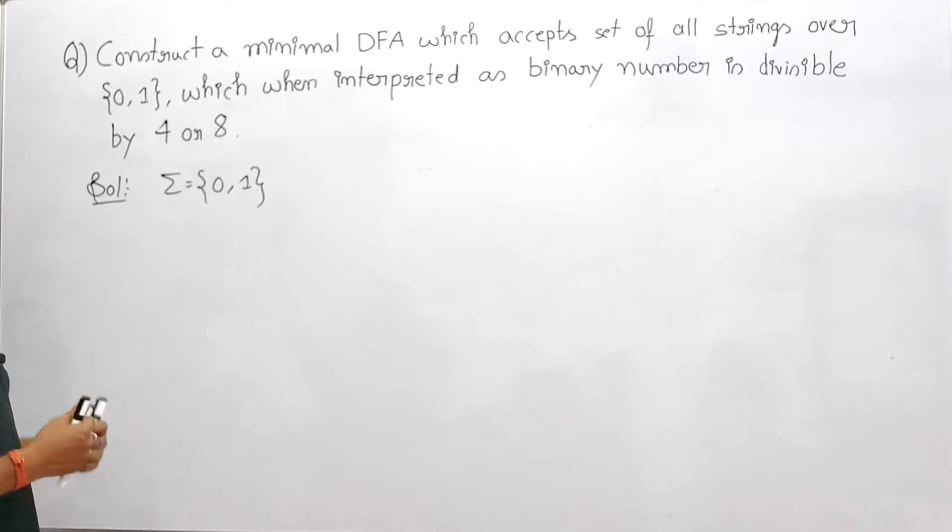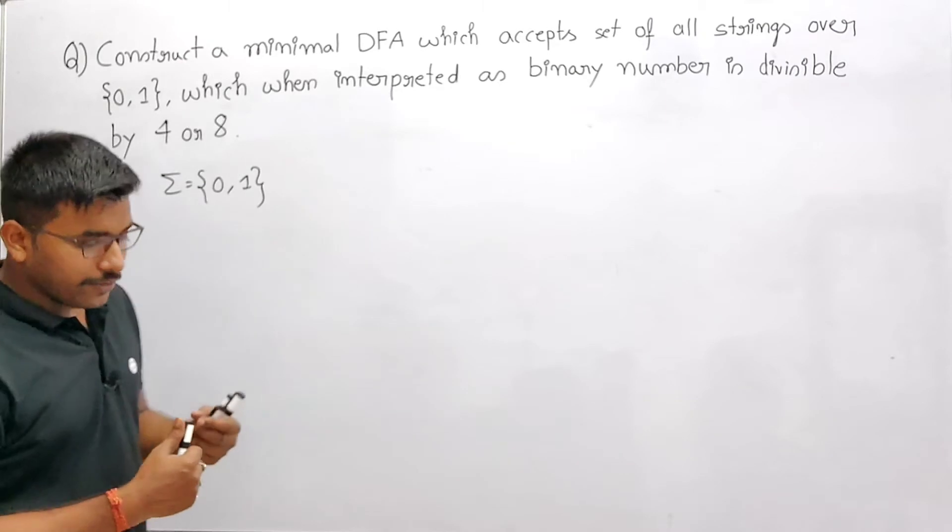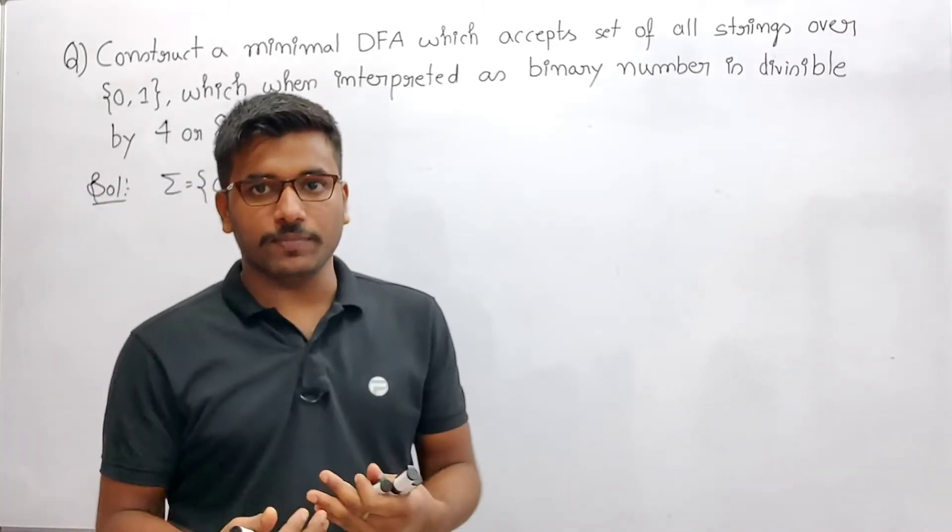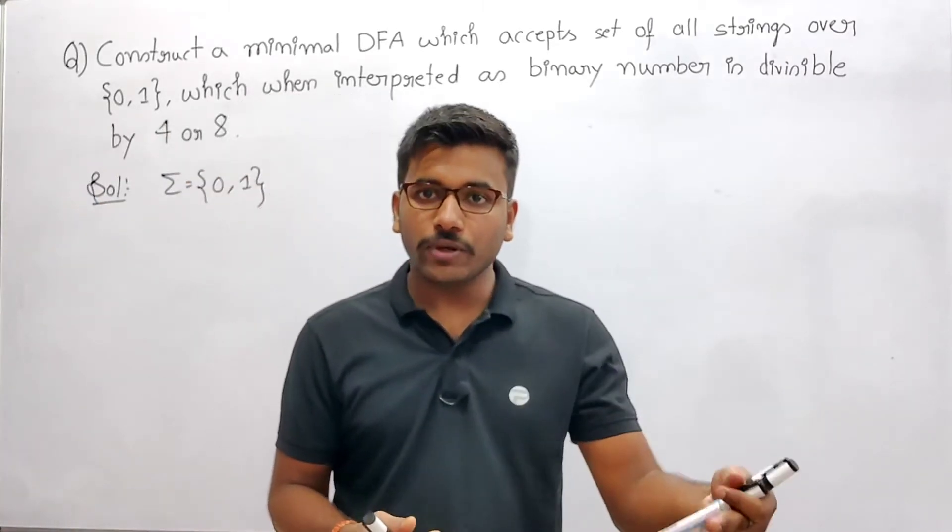Now see here, I've changed the number again. The number is now 4 or 8, meaning it will accept the set of all binary numbers which are divisible by either 4 or 8.